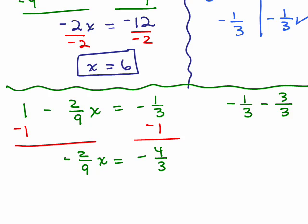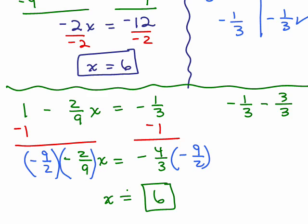Now I need to multiply by the reciprocal of negative 2 9th, so that I just get 1 x. So remember, if this is a negative, then the reciprocal is also going to be negative. So I'd multiply both sides by negative 9 halves, and on the left side, everything cancels, so it's 1 x, that's great, so we get x equals, and on the right-hand side, you could either multiply and get 36 over 6 and get 6, or you could cancel to get the answer of 6.